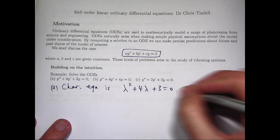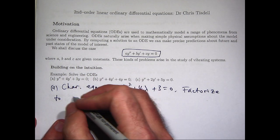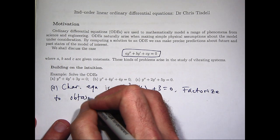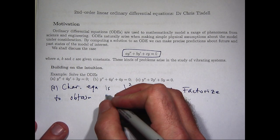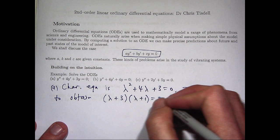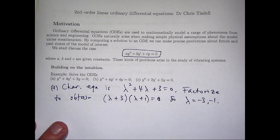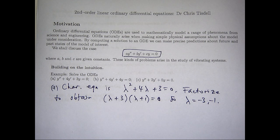So we can factorize. I want something like positive 3 and positive 1. So our roots are negative 3 and negative 1. Now let's just pause for a moment. The roots are both real numbers and they're not equal to each other. Under this case, the form of the general solution to my ODE is the following.